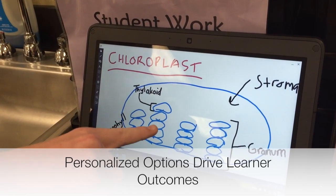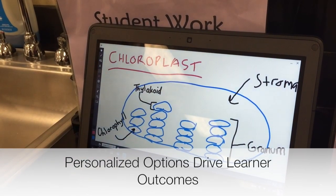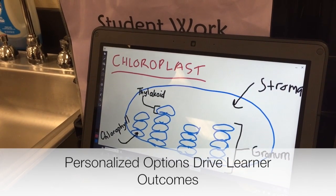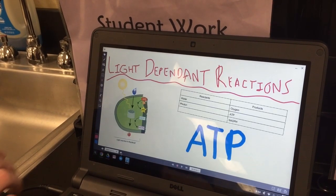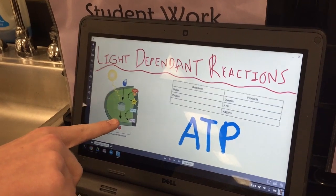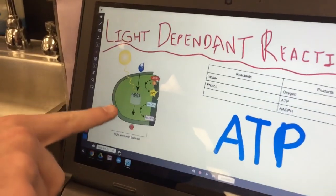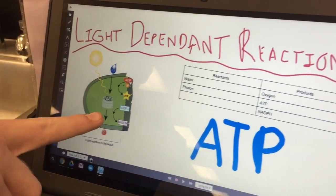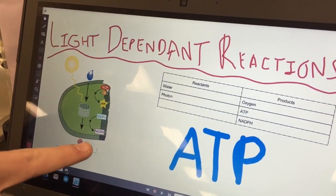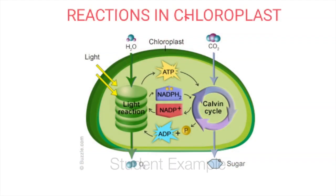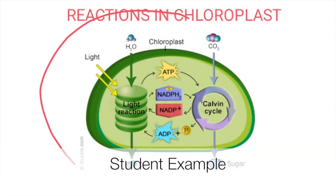The thylakoid — that's where the first part of photosynthesis takes place. So we're going to go there, and here's the first part — you can see where it is and what happens in it. Sun goes down, water goes in, oxygen comes out along with NADPH and ATP. This is the chloroplast — the whole thing — where photosynthesis takes place.